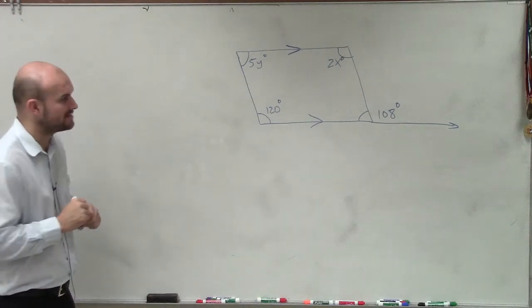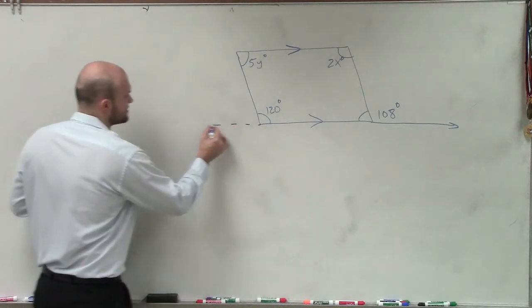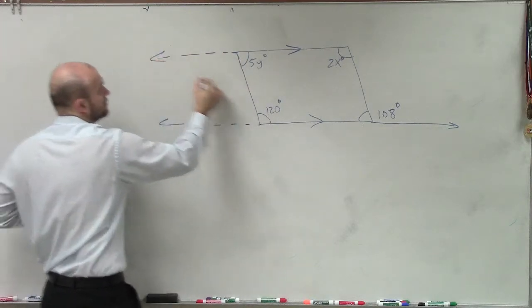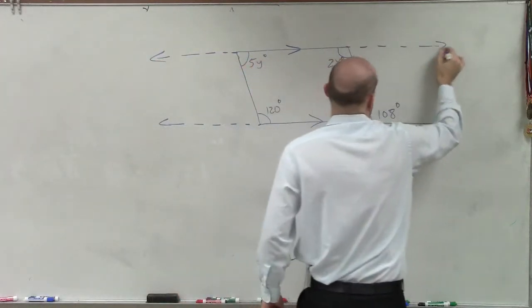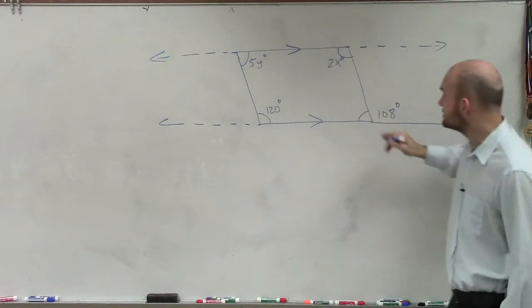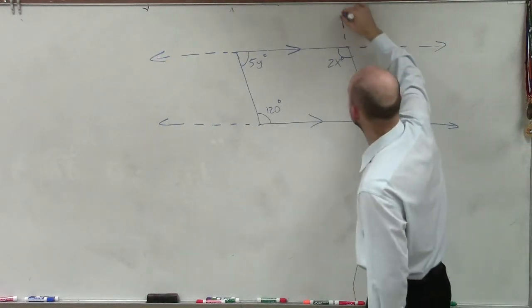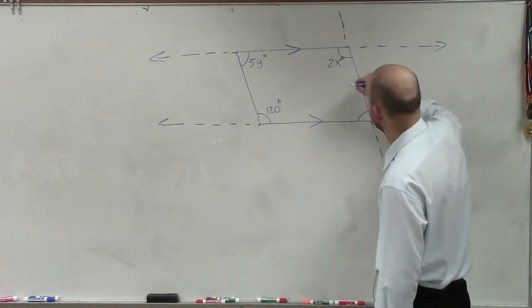Now, if I have these parallel lines, remember, we can just extend these. So you have two parallel lines, and then you have a line that intersects those parallel lines, which we call that transversal.